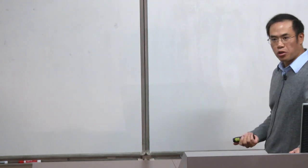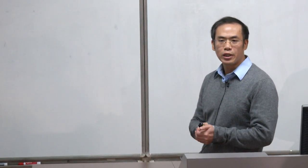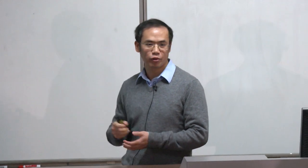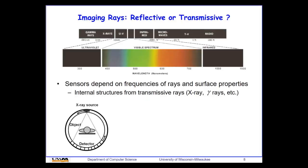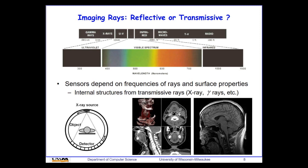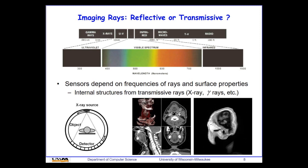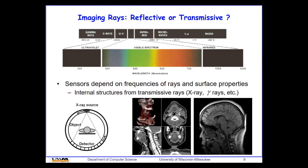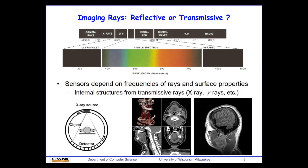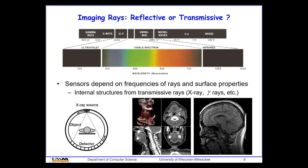To see internal structures, we consider transmissive rays. X-rays or gamma rays can penetrate the skin to reveal internal structures like bones or tissues with different intensities and geometries. This is the basis of 3D volumetric reconstruction using transmissive rays.